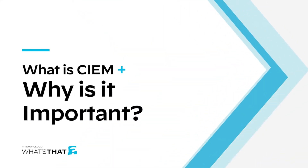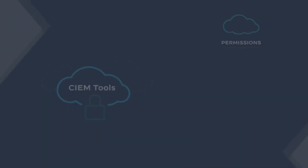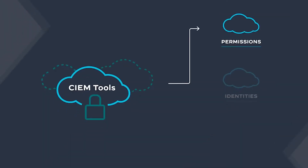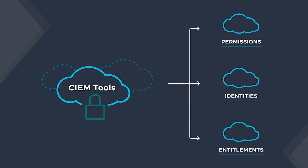CIEM tools are purpose-built solutions that help enterprises manage permissions, identities, and entitlements within cloud environments and the resources within them. Ultimately, the goal is to apply the principle of least privileged access, which just means giving users the lowest level permissions needed to perform their work.